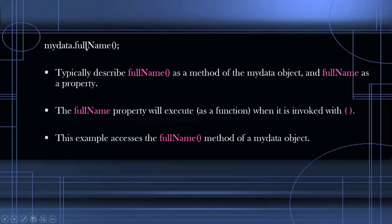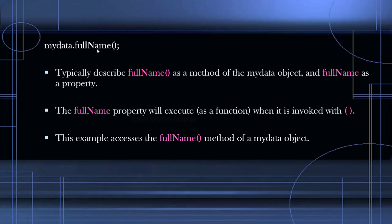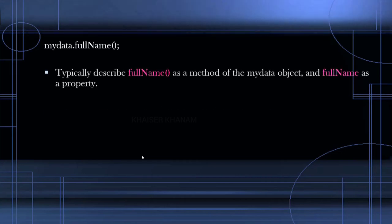This fullName property will be executed when it is invoked with parentheses. As soon as we give the parentheses, whatever that function is returning, that we will get as a result. If we give myData.fullName without parentheses, then whatever value is written — the exact function definition — I am going to get. I will not get the actual output like 'Haeser Kharnam'. Whatever it is, I am just going to get the function definition as my result, not the return output.